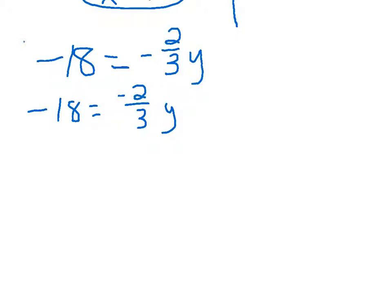Next, we want to get rid of the 3. We're going to do that by multiplying. And the 3s are going to cancel out. What we do on one side of the equation, we need to do on the other side. Negative 18 times 3 is negative 54.